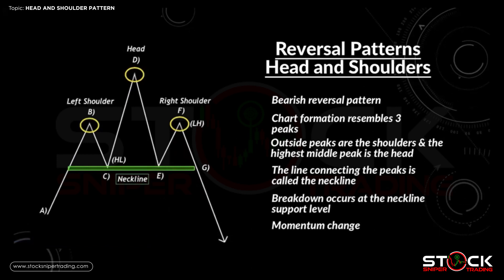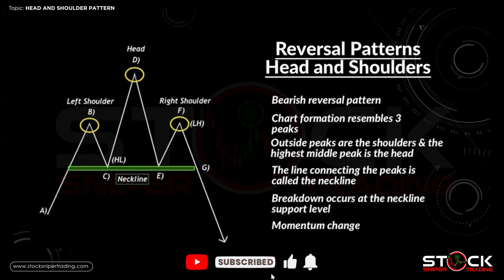You have a full reversal from a bullish uptrend to a bearish downtrend. The head and shoulders pattern is a bearish reversal pattern. The chart formation resembles three peaks — the outside peaks are the shoulders and the highest middle peak is the head. The line connecting the peaks is called the neckline. The breakdown occurs at the neckline support level and we get a momentum change from bullish to bearish.